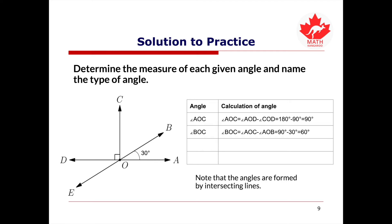Since 60 degrees is less than 90 degrees, angle BOC is an acute angle. Angle AOE equals angle AOD plus angle DOE, which is 180 degrees plus 30 degrees, so angle AOE equals 210 degrees. Since 210 degrees is greater than 180 degrees and less than 360 degrees, angle AOE is a reflex angle.